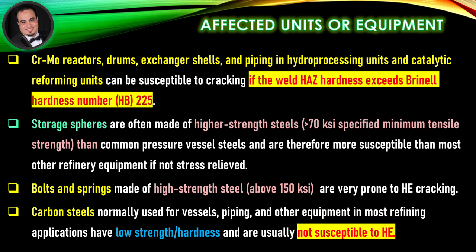If not stress relieved, bolts and springs made of high-strength steel above 150 KSI are very prone to hydrogen cracking. Carbon steels normally used for vessels, piping, and other equipment in most refining applications have low strength and hardness and are usually not susceptible to hydrogen embrittlement.